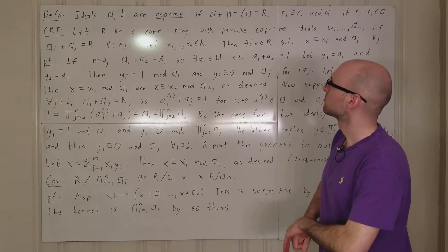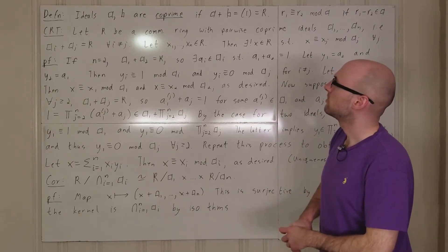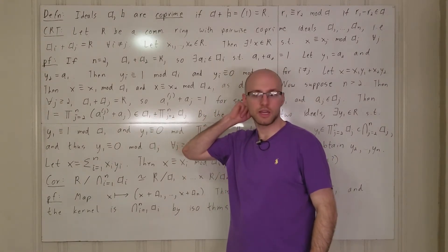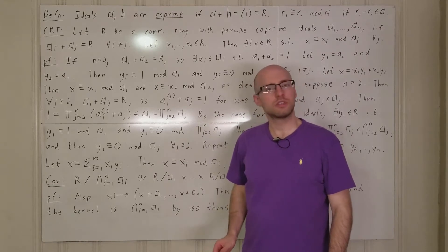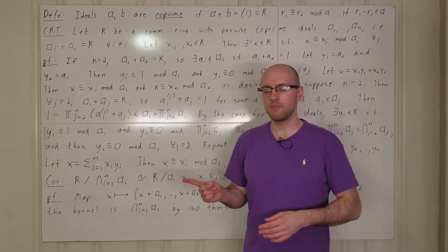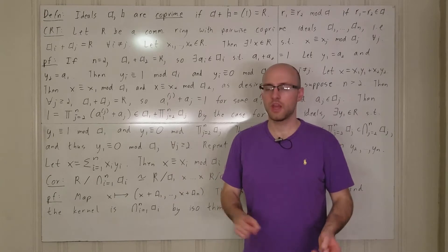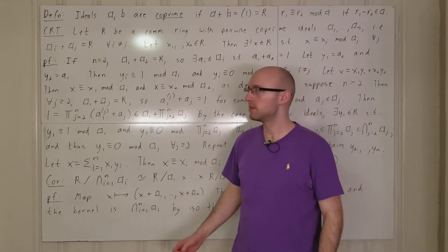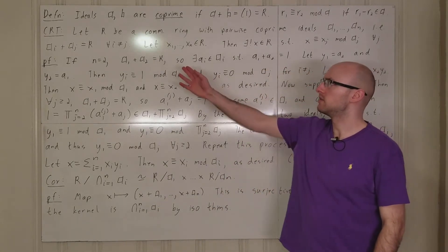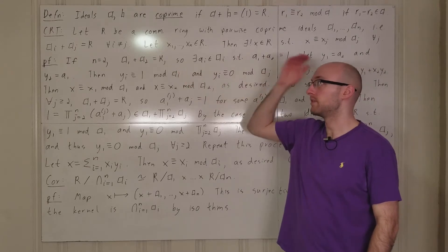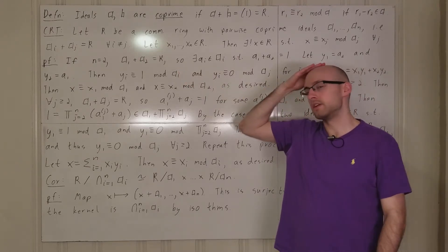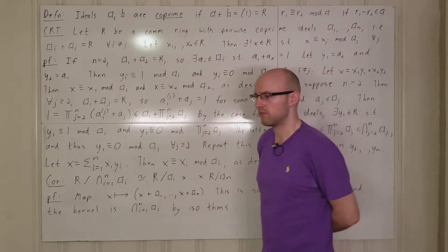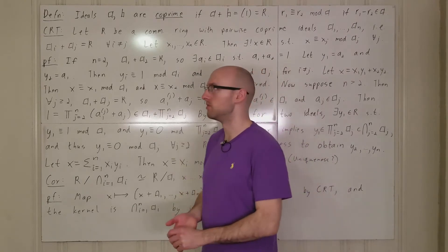Now we have the Chinese Remainder Theorem. This was written down by a guy named Sun Zhu — his name means Master Sun — and he has the same name as the guy who wrote the Art of War, but it was a different person. This theorem is very old, and rings are very new — rings are like 1900s, so they're mathematically very new.